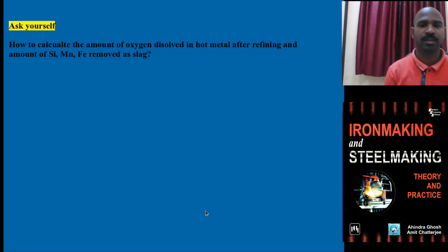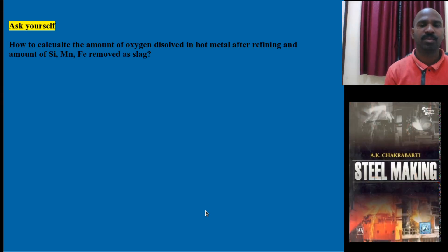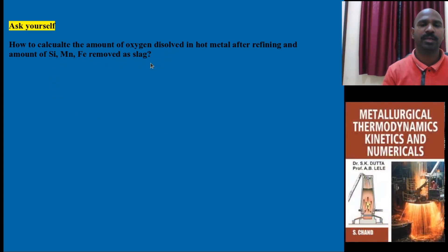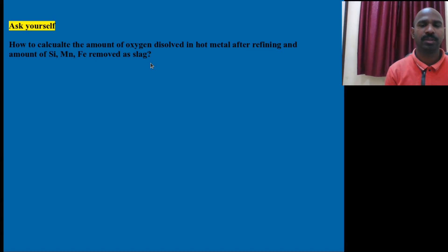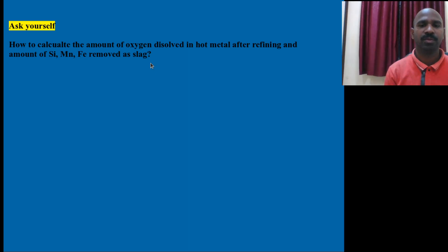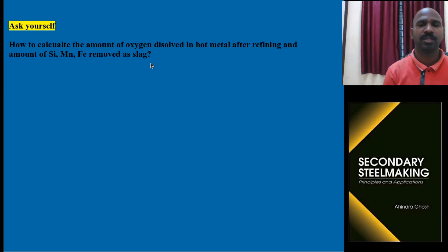Now think about how to calculate the amount of oxygen dissolved in hot metal after the secondary steelmaking process, and how much silicon, manganese, and iron are removed as slag. How do you calculate these things? Raoult's law and Henry's law are very useful here, and these can be understood clearly by solving the thermodynamic equations. Thank you.